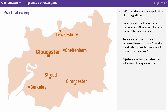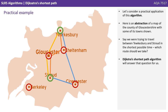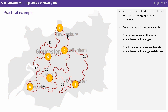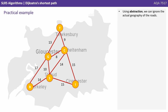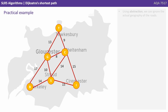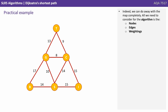Let's consider a practical application of this algorithm. Here's an abstraction of a map of the county of Gloucestershire with some of its towns shown. Say we were travelling between Tewkesbury and Stroud in the shortest possible time — which route would we take? Dijkstra's shortest path algorithm will answer that question. We would store the relevant information in a graph data structure: each town becomes a node, the routes between nodes become edges, and the distance between each node becomes the edge weightings. Using abstraction we can ignore the actual geography, and all we need is the nodes, edges, and their weightings.